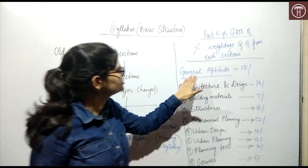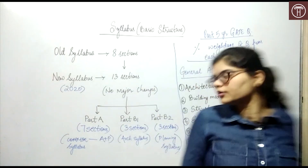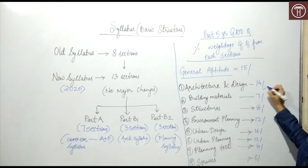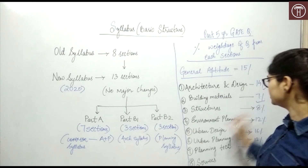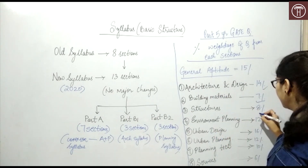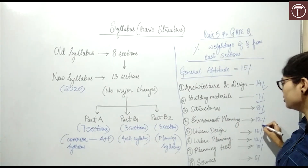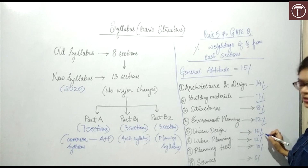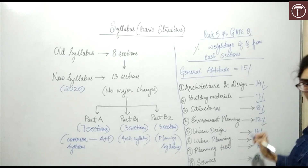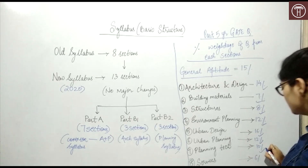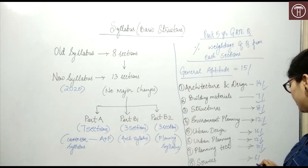In general aptitude, it is fixed at 15%. Next, architecture and design is 14%, building materials 7%, structures 8%, environment planning 12%, urban design 16%, urban planning 12%, planning techniques 10%, and services 6%.